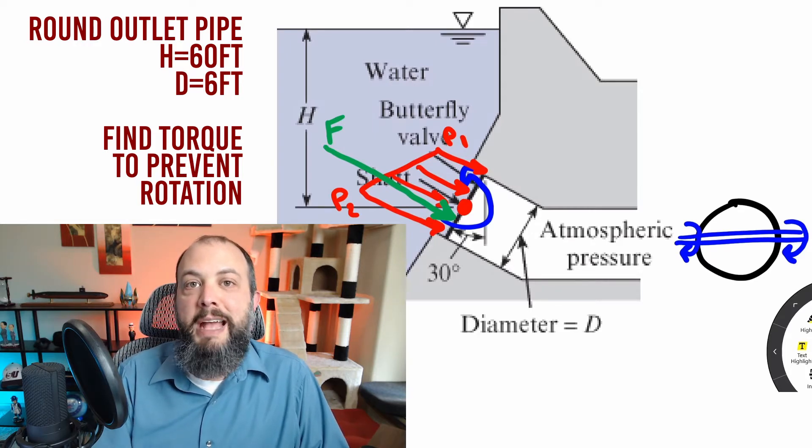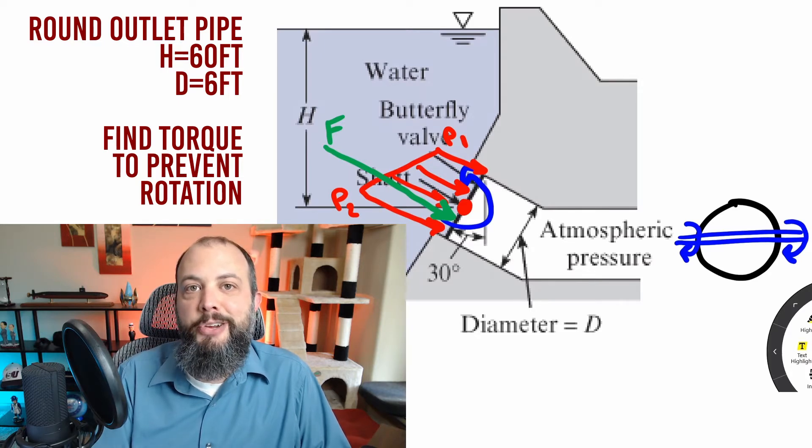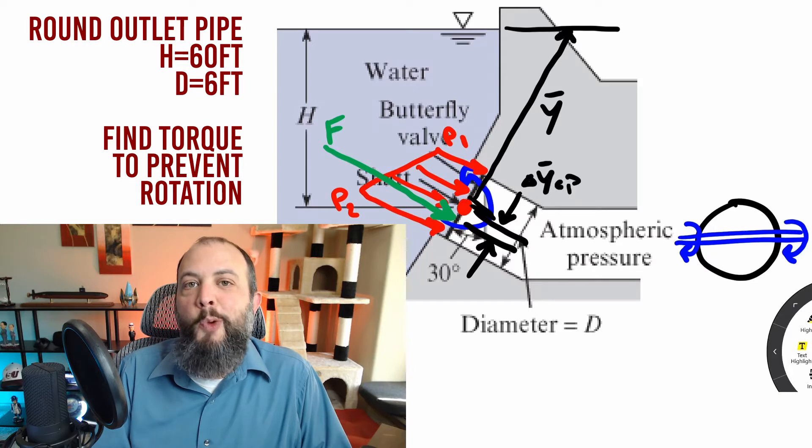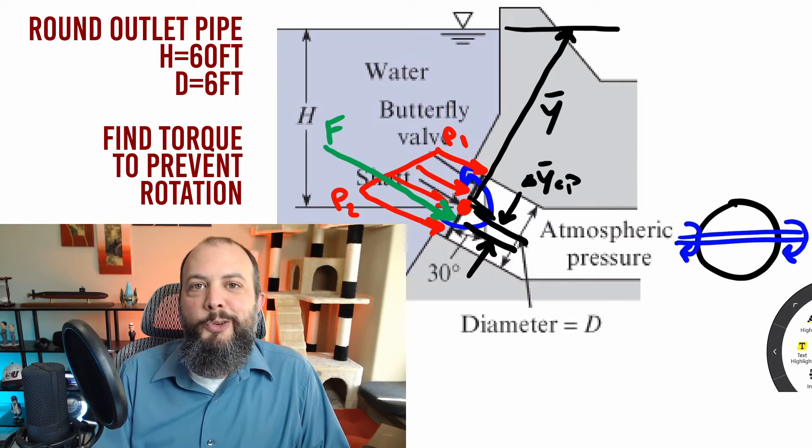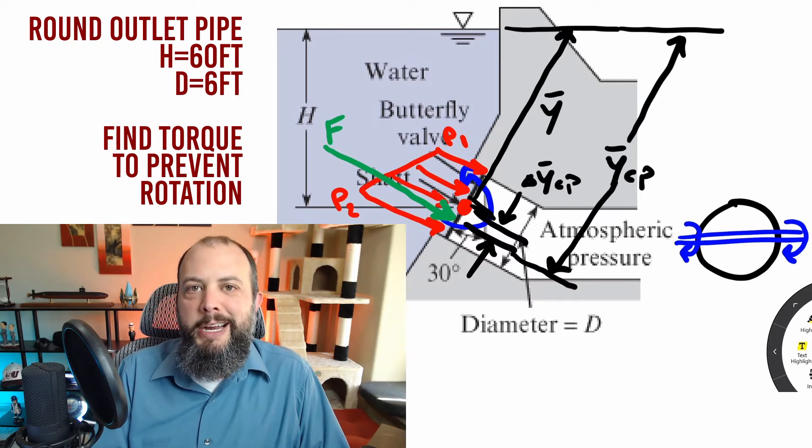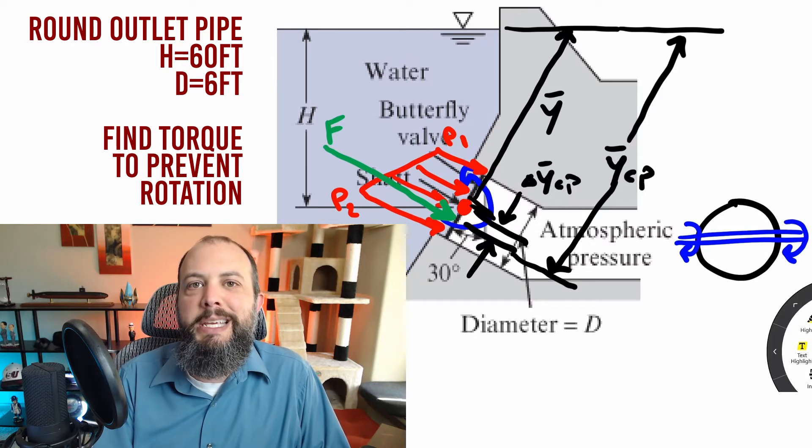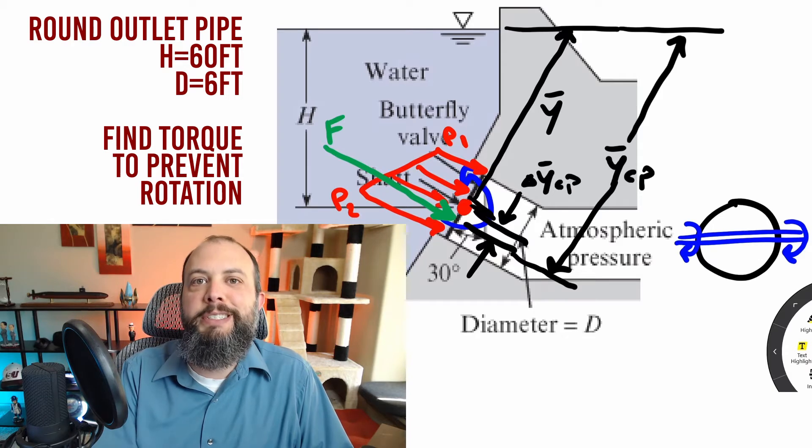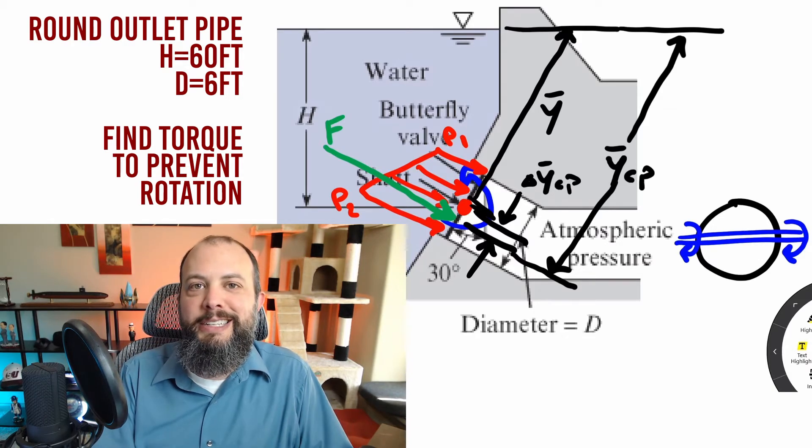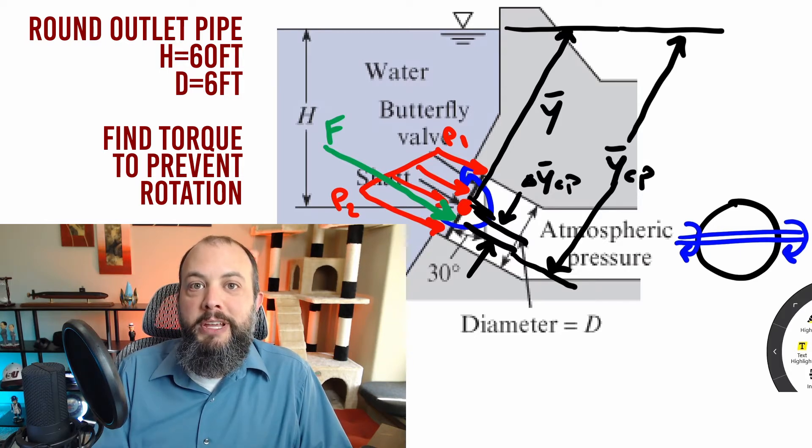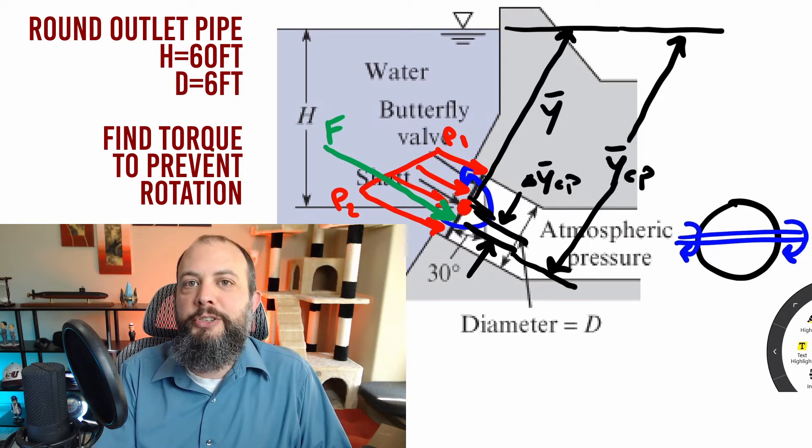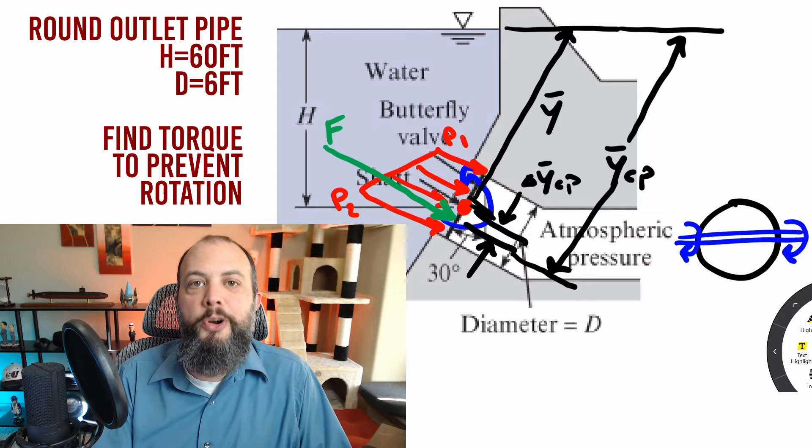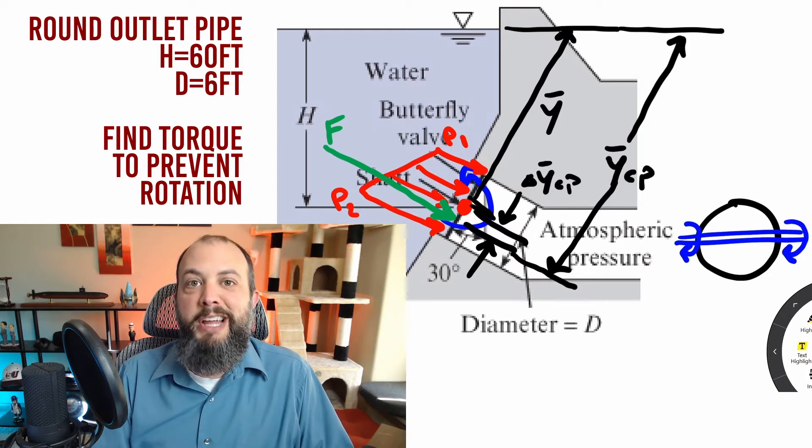Because of this, we expect the force to actually be acting a little bit below the centroid and therefore below the pivot point for the butterfly valve. To solve this problem, we're going to need to find the magnitude of this force, which is the pressure at the centroid times area. We're also going to need to find where this force is acting since it's not acting exactly at the centroid. The real distance that we need is this Y bar CP.